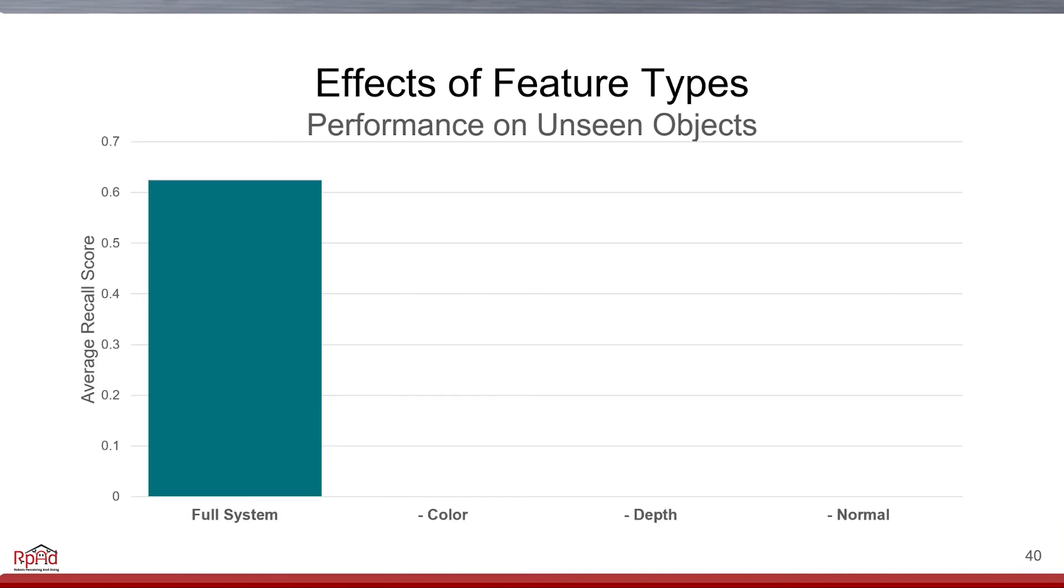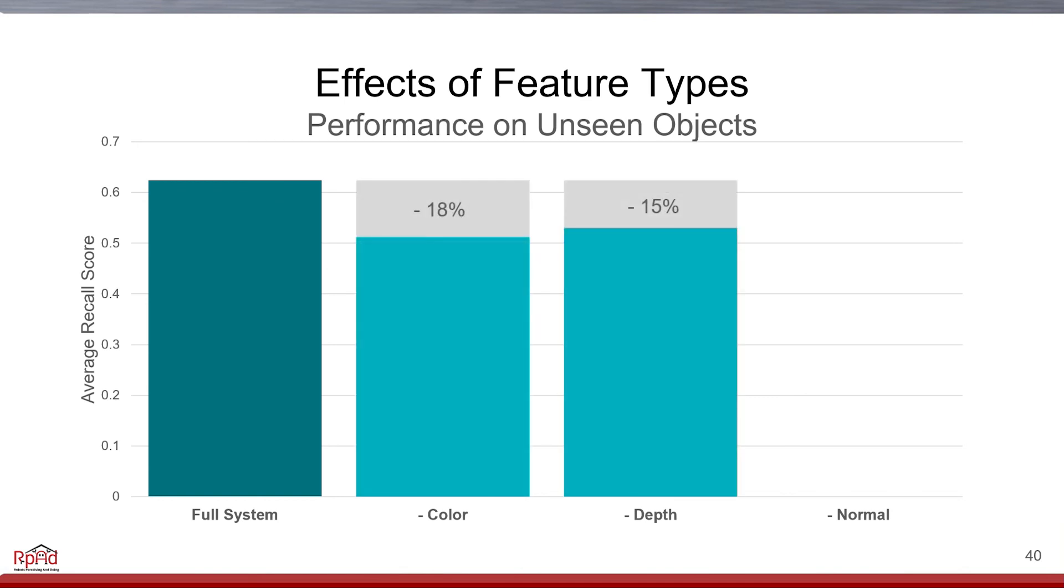As for the individual features, we tested our method without each difference element, and found that the color and depth information best improve our performance on unseen objects, with surface normal giving us a minor improvement.